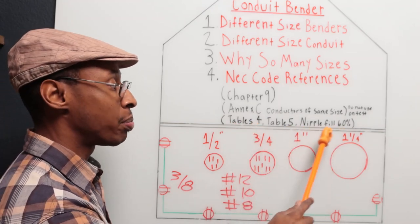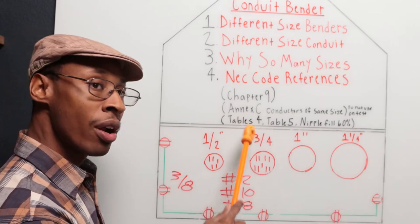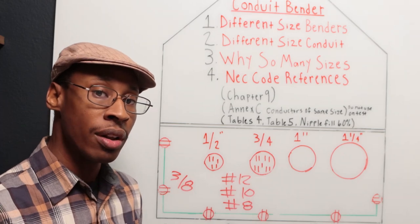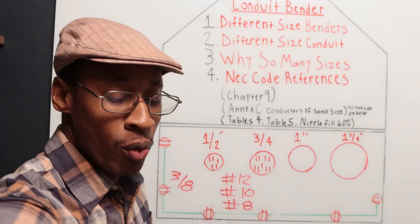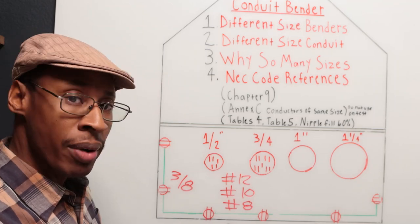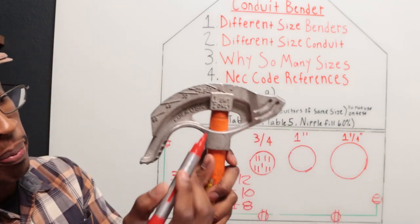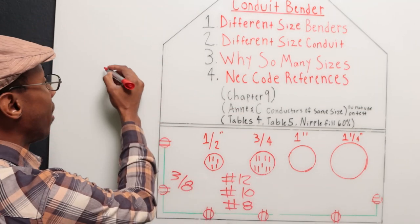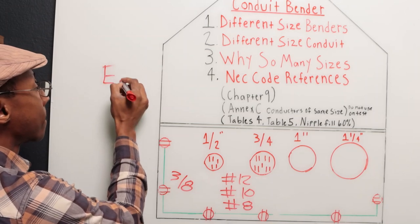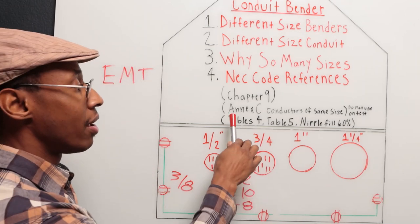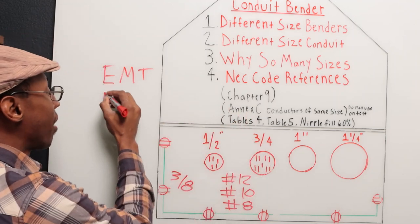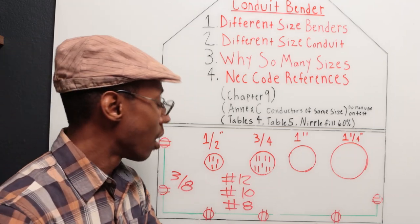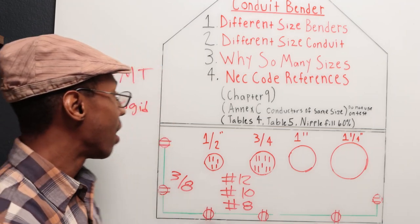And the nipple fills 60%. So in table four, it's going to have every piece of conduit you can imagine. So what I mean by that is you have what we talked about today. And what you see on the bender here, it says EMT. That's electric metallic tubing. So you have EMT, which is going to be in table four. You have rigid conduit.